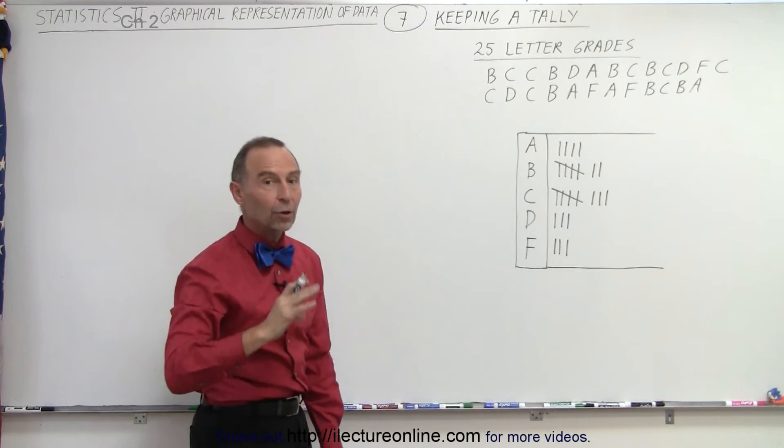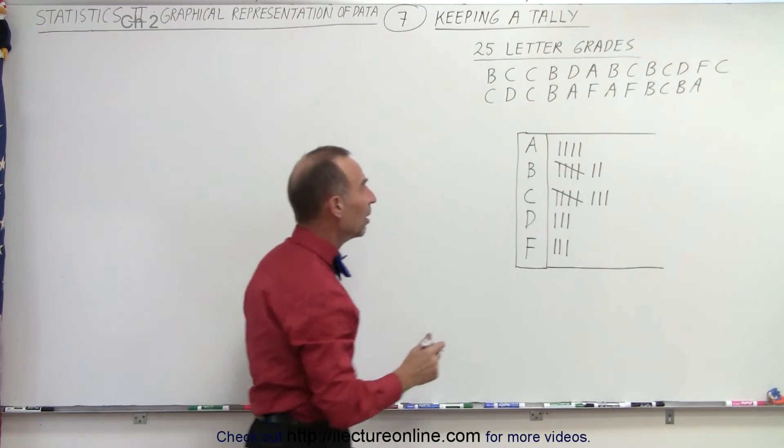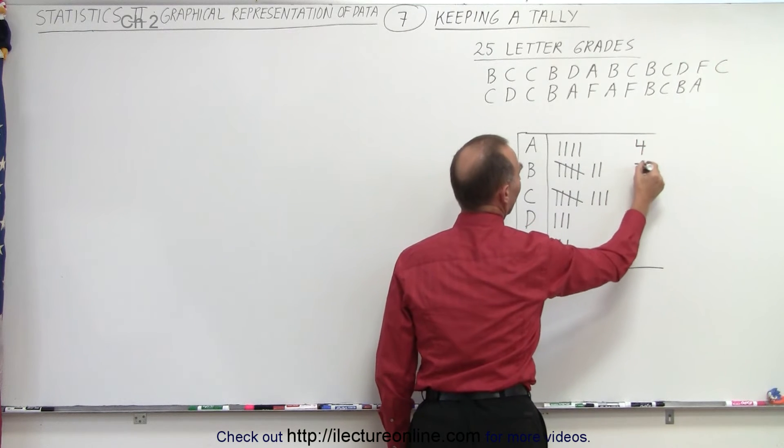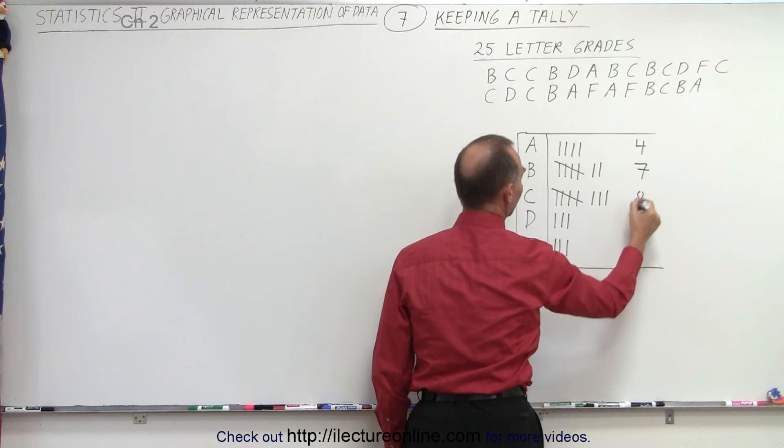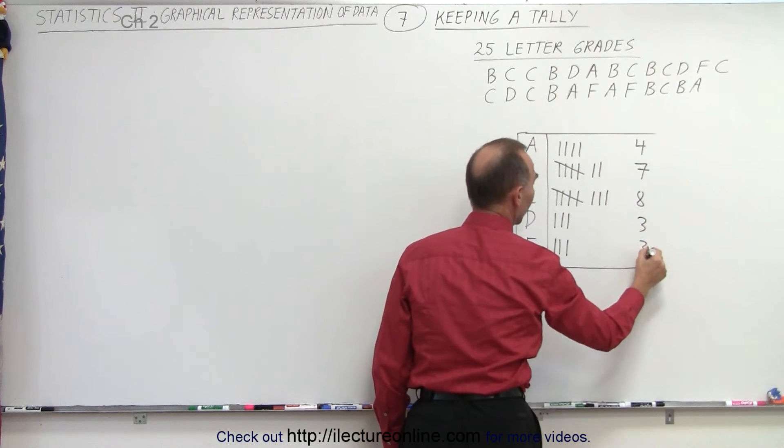And so now you can see very quickly, counting how many of each we have. We have four A's, seven B's, eight C's, three D's, and three F's.